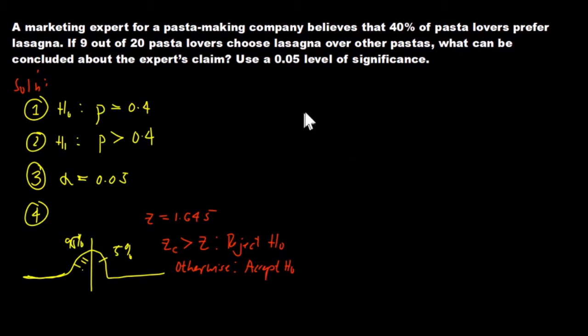The fifth step is to compute. Our formula is: computed Z equals P hat minus P0 over the square root of P0 times Q0 over n. Our P hat is equal to 9 out of 20, 9 over 20. That is the probability of the sample.